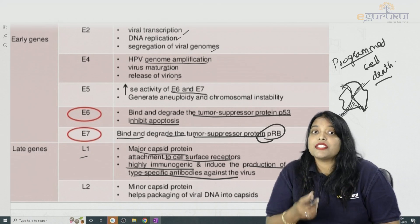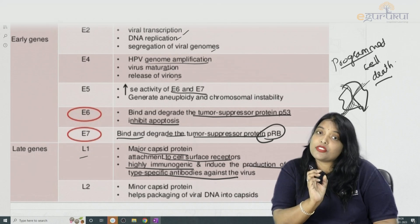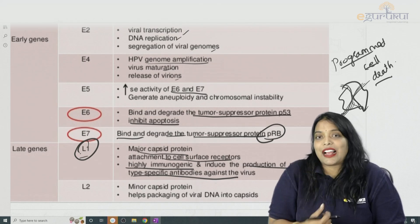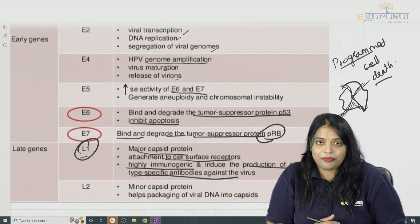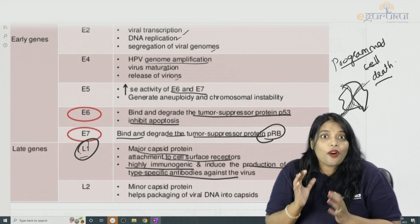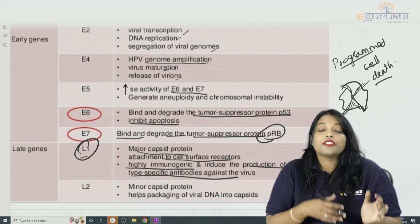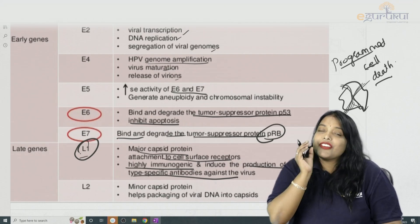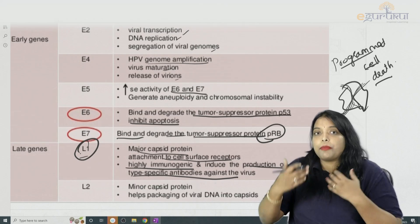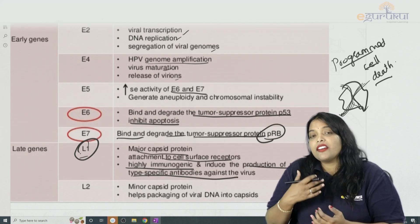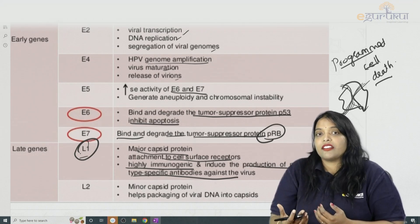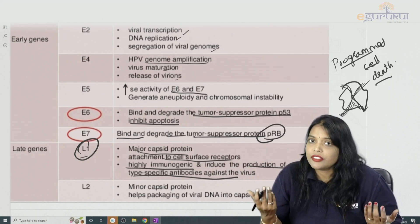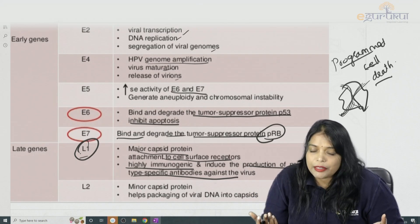That is why we take this immunogenic potential of L1, amplify it as a vaccine, and administer it. The concept behind the vaccine is that since L1 has immunogenic potential, we amplify that L1 protein to achieve better immunogenicity coverage so that HPV infection can be suppressed.